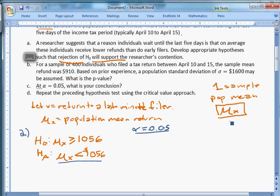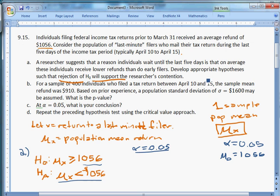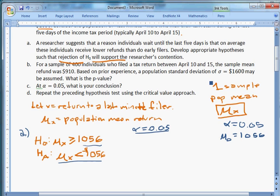I'm going to put it over here. I'm going to try to put all my information that I need over to this side. Mu zero, that's the mean under the null, is going to be taken from the right side. It's $1,056. So we have that information already. We also have a sample size. Part B. For a sample of 400 individuals who filed a tax return between April 10th and 15th, the sample refund was $910. The sample mean refund, so X bar equals $910. Based on prior experience, a population standard deviation of sigma equals $1,600 may be assumed. What is the p-value?